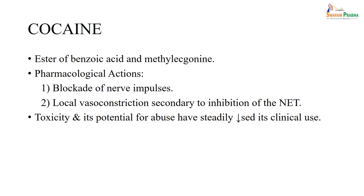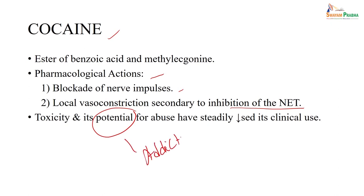The older local anesthetic initially isolated and studied in detail was cocaine — a benzoic acid ester of methyl ecgonine. Its pharmacological action is local anesthetic by blocking nerve impulses. It also causes local vasoconstriction due to stimulation of nerve endings. However, it has significant toxicity and, most importantly, abuse potential and addiction, which is the reason it is no longer preferred and has no current clinical use.